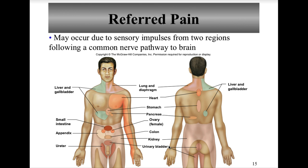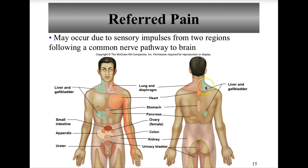Referred pain may occur due to sensory impulses from two regions following a common nerve pathway to the brain. Looking at the diagram, you can see that issues with the heart produce referred pain in the left arm and back area. Issues with the liver or gallbladder show referred pain in both ventral and dorsal regions. The diagram shows associations between various internal organs and their referred pain locations.